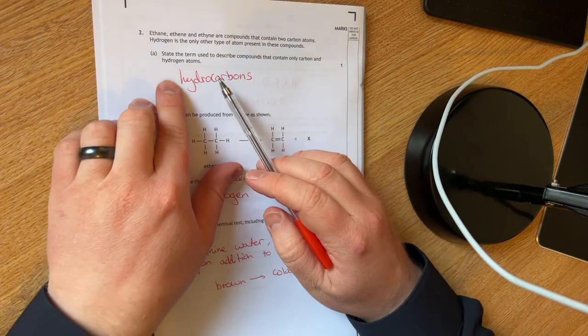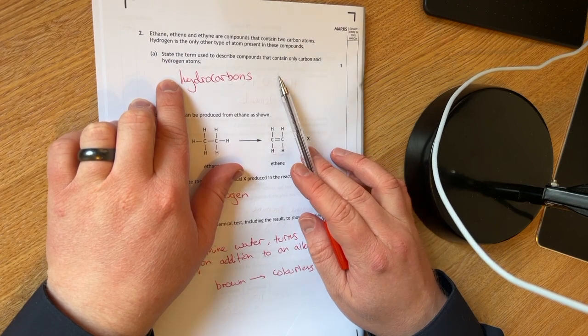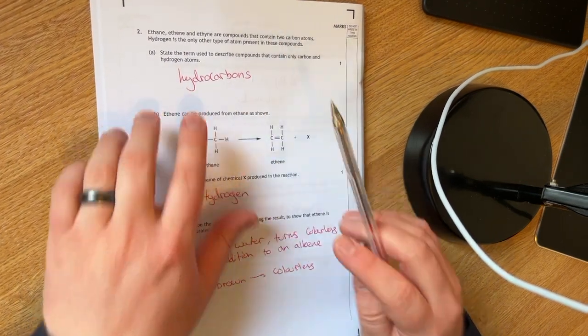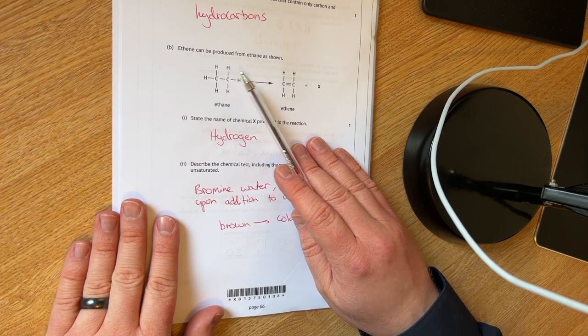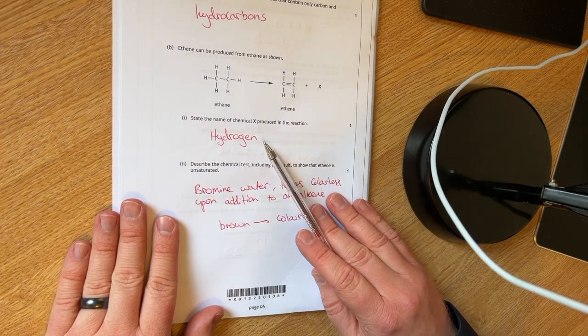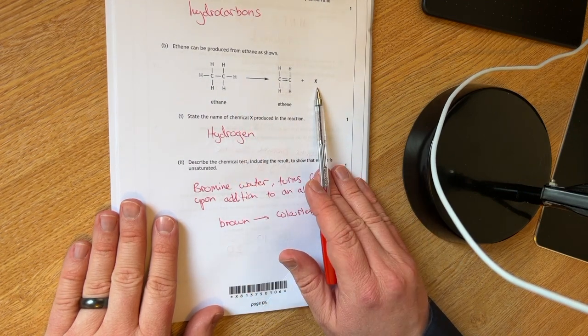Question two. You've to state the term used to describe compounds that contain only carbon and hydrogen atoms. That is hydrocarbons. Ethene can be produced from ethane. State the name of chemical X. So we are making hydrogen.